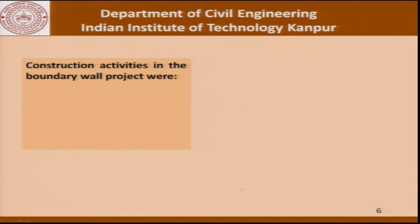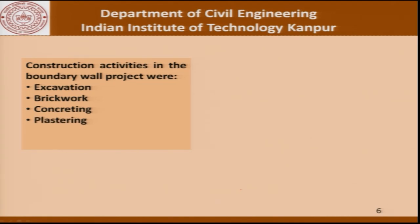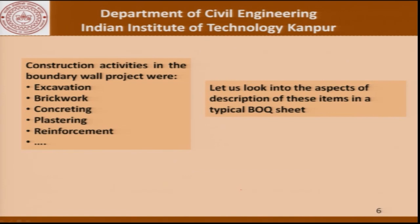The construction activities in the boundary wall project include: excavation, brickwork, concreting including PCC and RCC, plastering, reinforcement, a small item of structural steel, shuttering and so on. Now let us look at some of the aspects relating to description of these items as they should appear in a typical bill of quantities sheet.